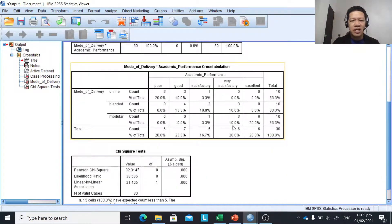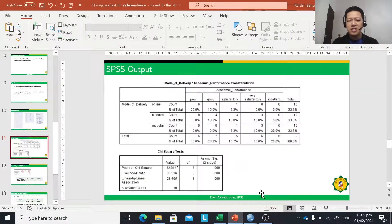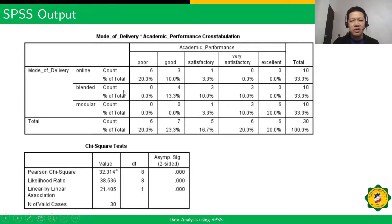This is the SPSS output. The values to include in your table — which you can include in your manuscript — are the percentage and frequency for mode of delivery and academic performance. That is the cross-tabulation of the two variables.